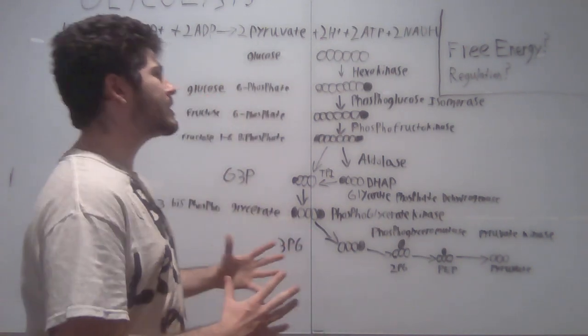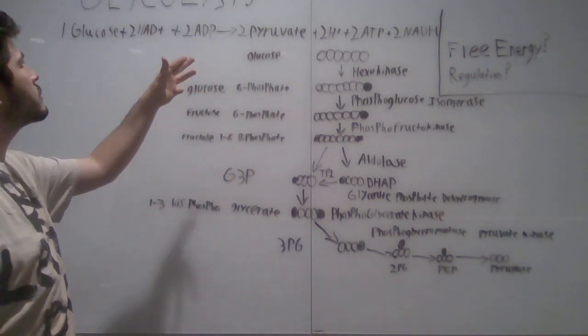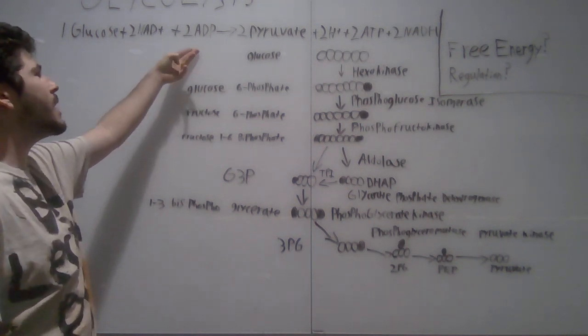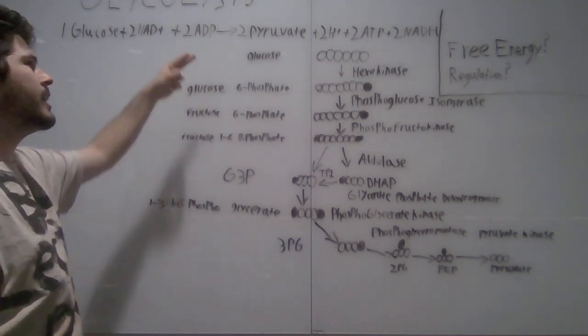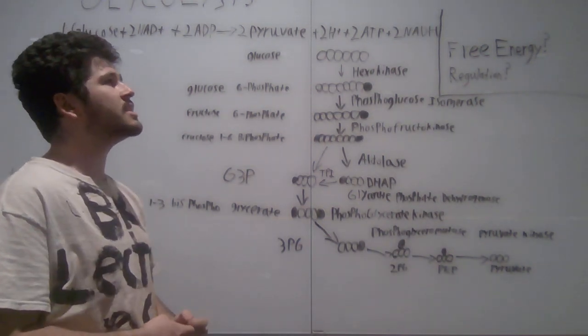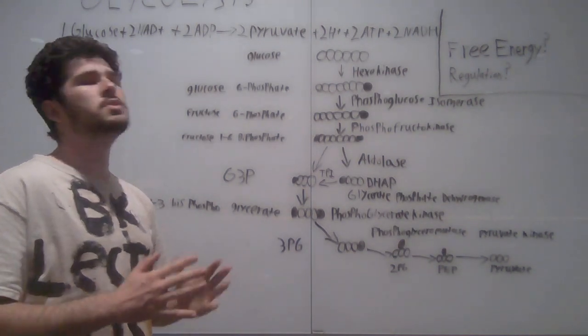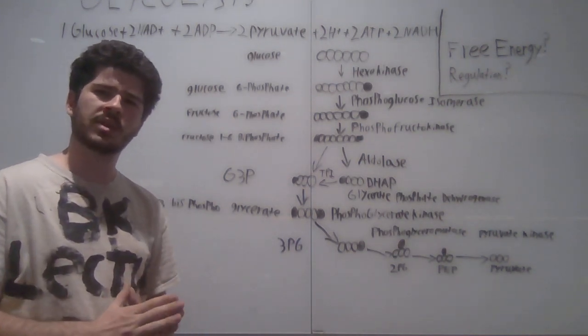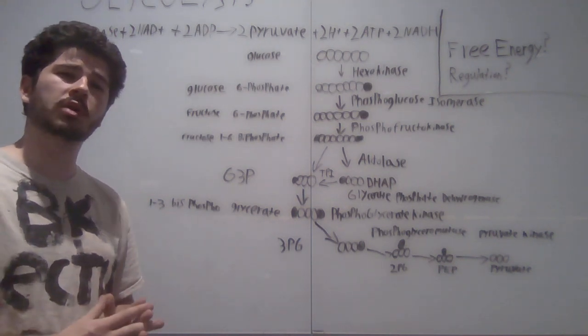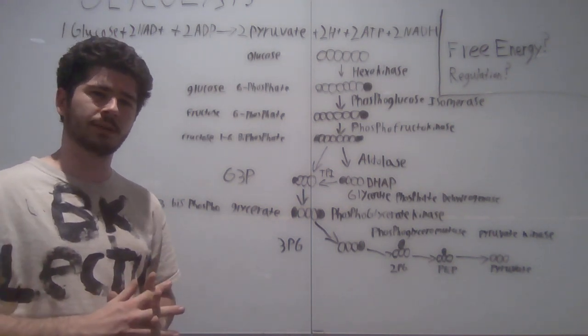Overall, glycolysis takes glucose, many cofactors, NADH and 2-ADP, and turns it into pyruvate, 2-H-plus ions, 2-ATP ions, and 2-NADH ions. This allows for the TCA cycle to have fuel in producing ATP for the body.